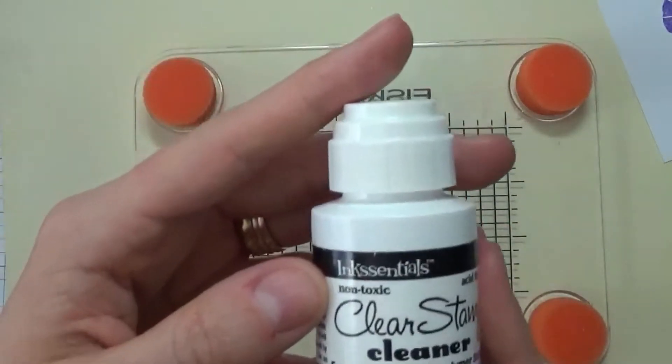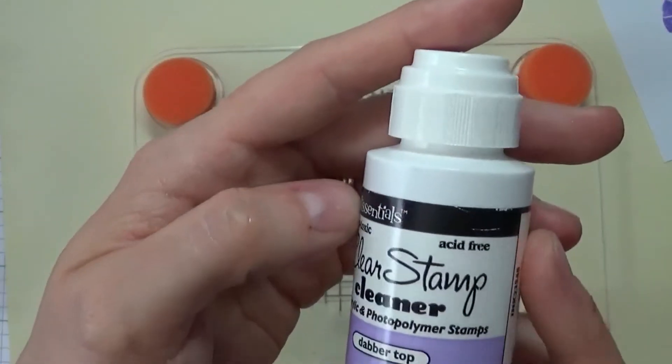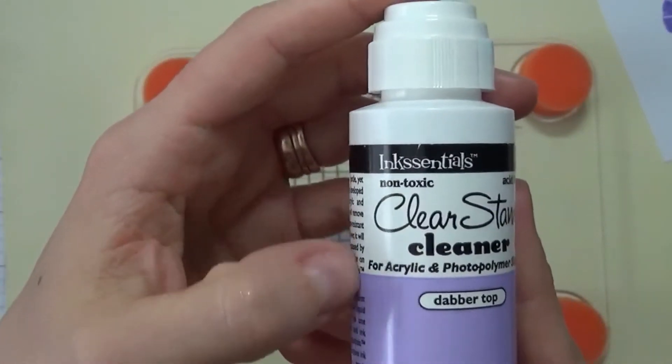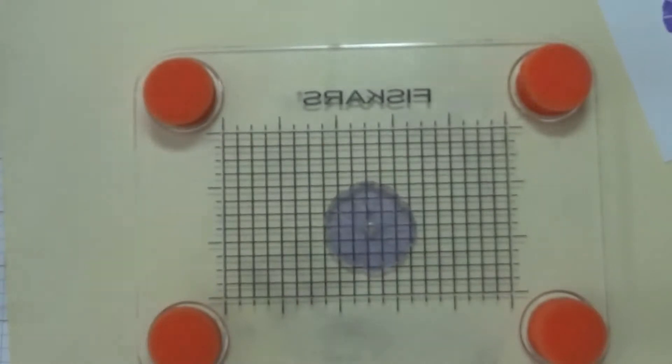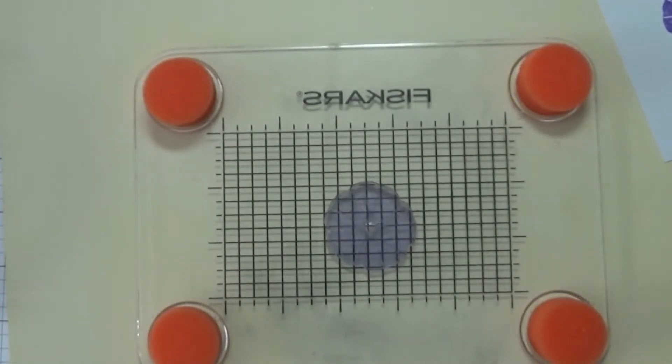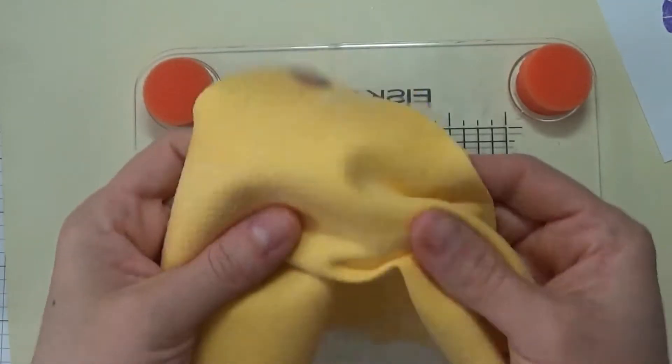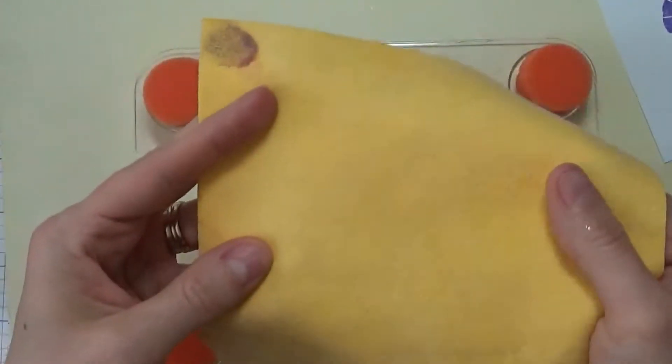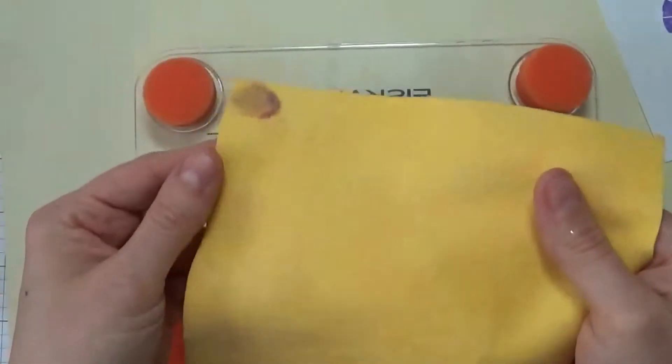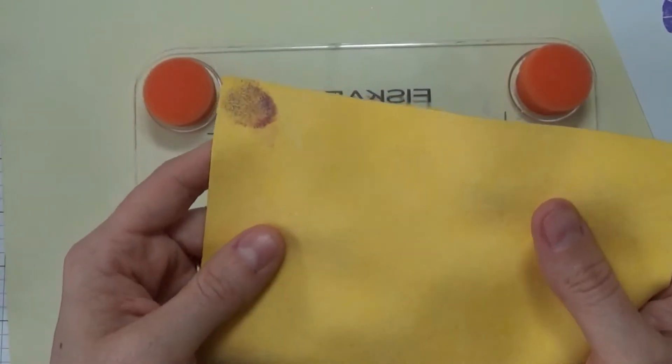I did buy some of this Ink Essentials cleaner just for some more difficult inks to take off of the stamps, but in reality all you really need is something like this. This is a chamois, and I do have a video which I will link at the very end of this video about these chamois.